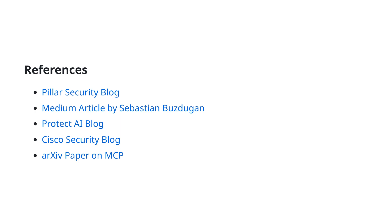We are provided with a list of references that have guided our understanding of the material and concepts related to MCP security and implementation. These sources offer valuable insights and perspectives from industry experts and thought leaders. The Pillar Security Blog and Cisco Security Blog are excellent resources for staying updated on the latest security trends and best practices in managing MCP environments.